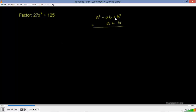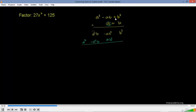If you have a squared minus ab plus b squared, and you multiply that times a plus b, let's think about what we're going to get. b times b squared is b to the third. b times negative ab is negative ab squared. b times a squared is a squared b. Now a times b squared is ab squared, a times negative ab is negative a squared b, and a times a squared is a to the third.